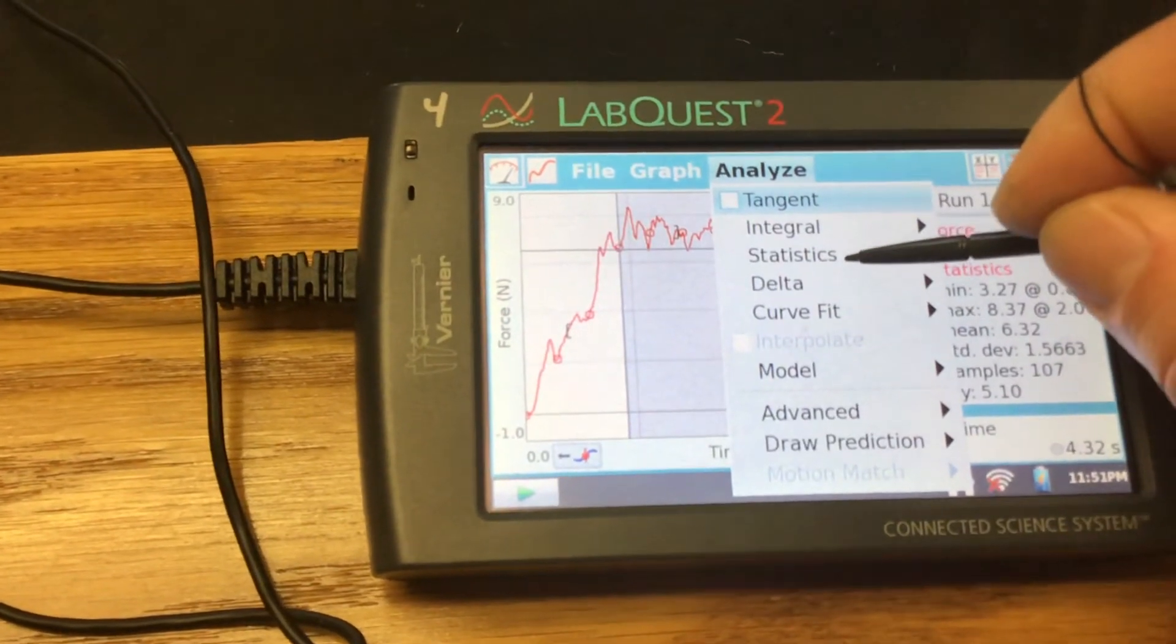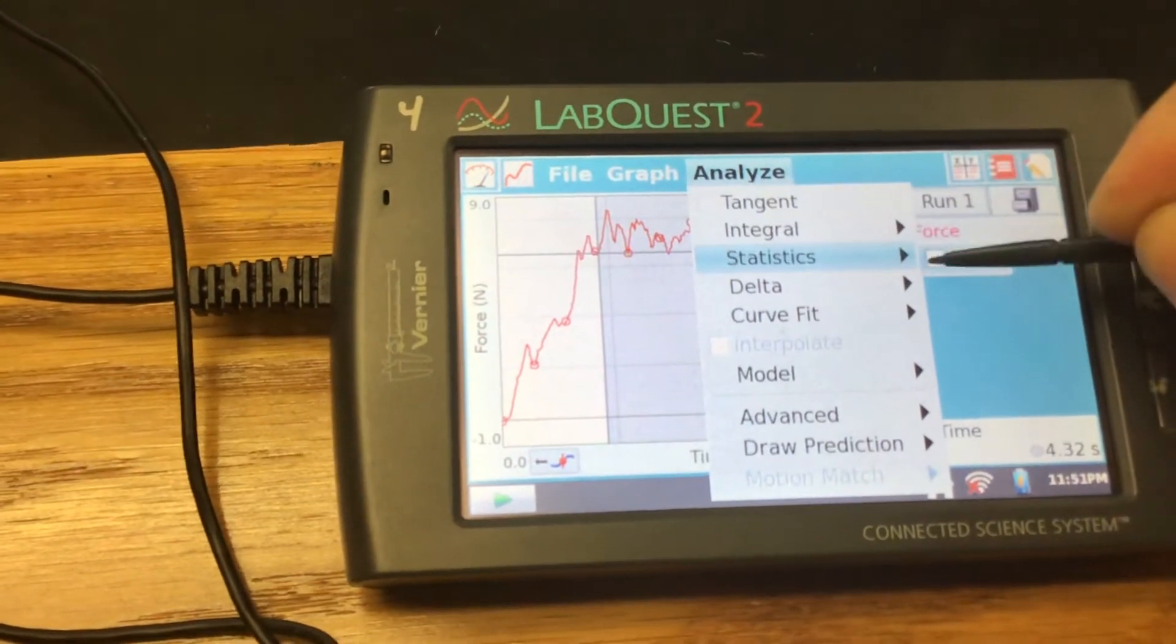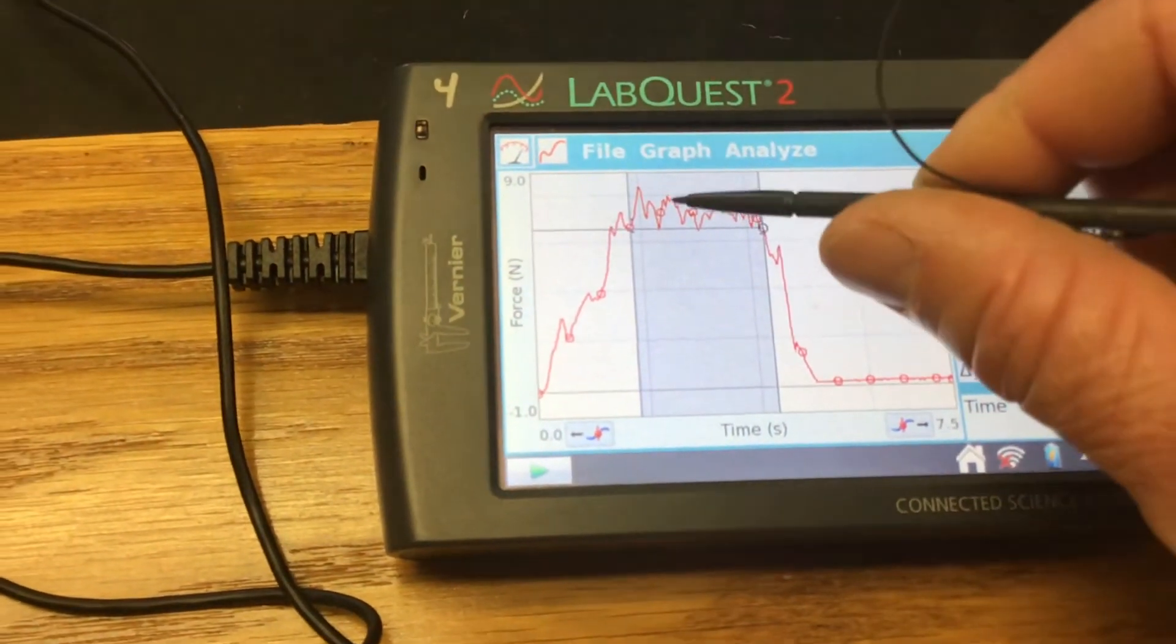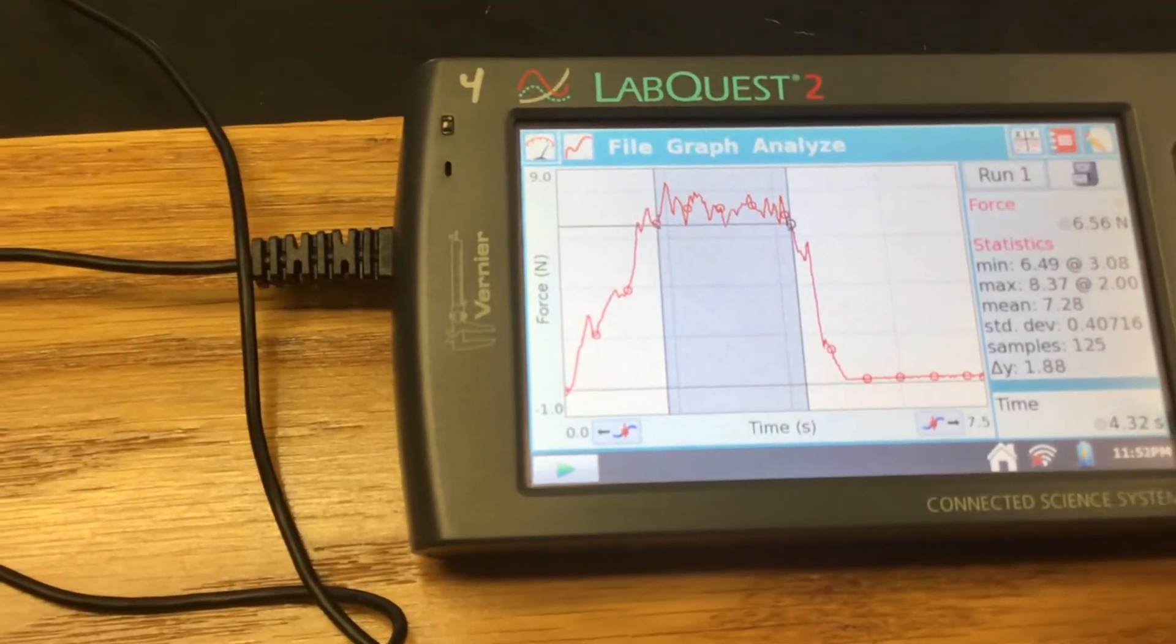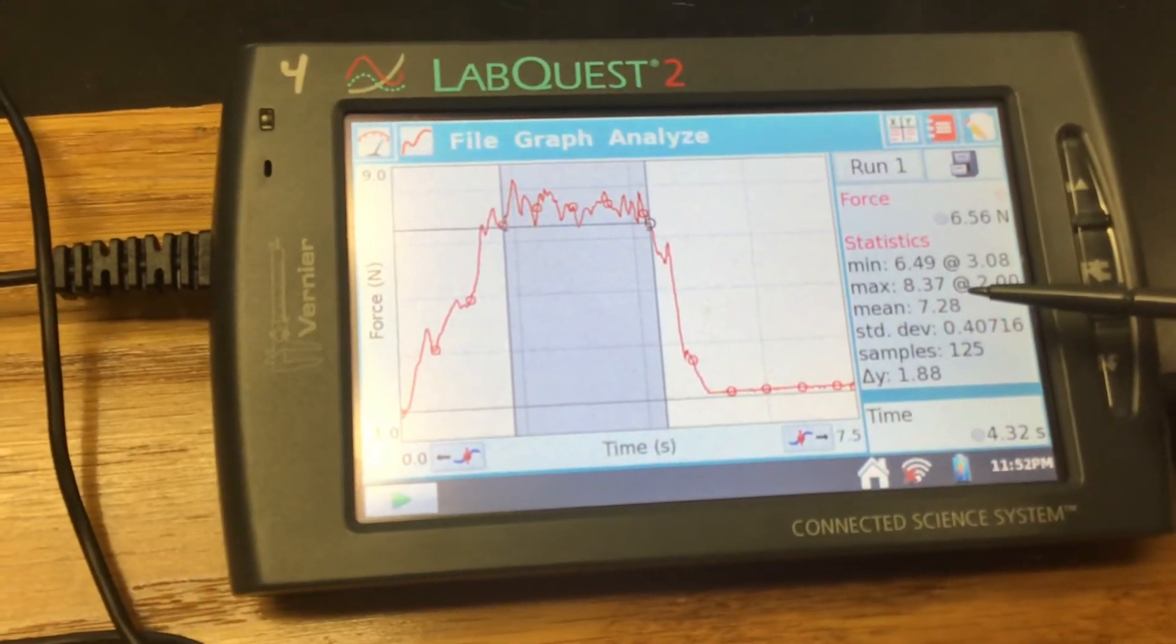Click on analyze, statistics, select force, and now I want to look at the mean value. So this is the average force it took to keep this thing sliding to overcome sliding friction. So the answer for this is 7.28 Newtons.